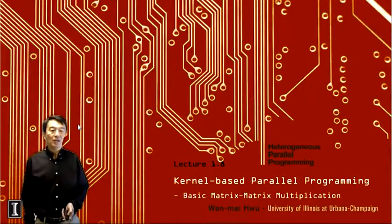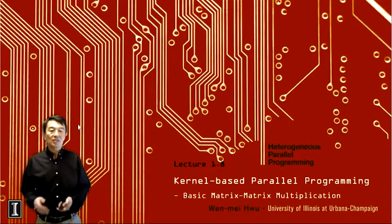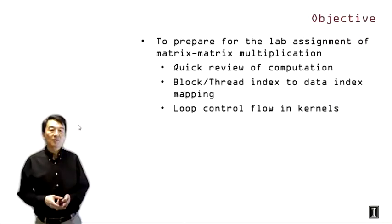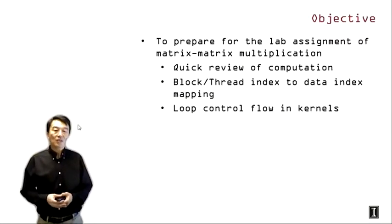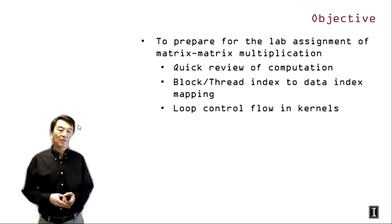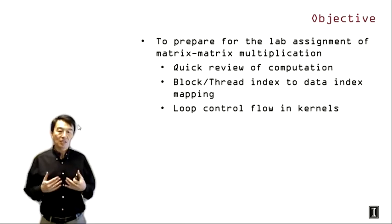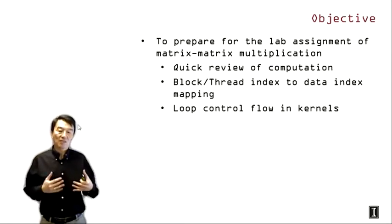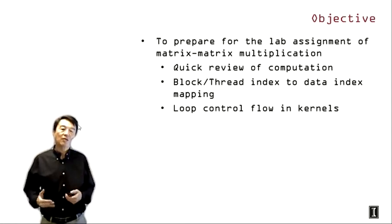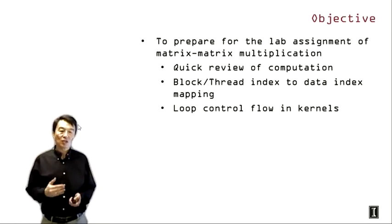Welcome back to the heterogeneous parallel programming class. We are at lecture 1.8: kernel-based parallel programming. We will be discussing basic matrix-matrix multiplication. The objective for this lecture is to prepare you for the lab assignment of matrix-matrix multiplication. We will first review the computation for matrix multiplication, discuss data block and thread index to data index mapping, and then introduce loop control flow in kernels.